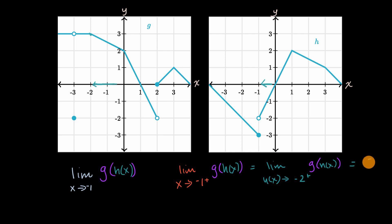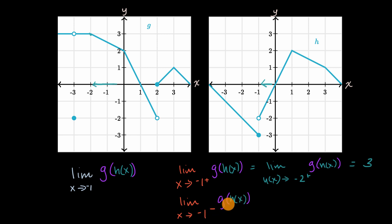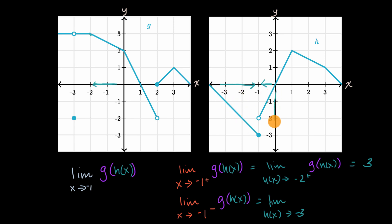We can see that g is approaching three, so this right-hand limit equals three. Now let's take the limit as x approaches negative one from the left of g of h of x. We first think about what h is approaching as x approaches negative one from the left. As x approaches negative one from the left, it looks like h is approaching negative three, from values greater than negative three — h of x is approaching negative three from above.